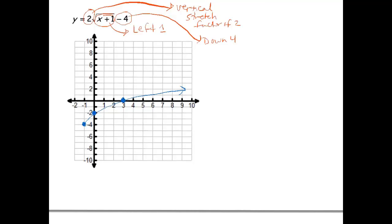And notice that the order I did my translations was the left, or in this case, we did left but we could have done right. That was our first translation. The second was the vertical stretch. And the third was the up down. And that's just because of the order of operations, right? If we were to substitute a value in for x, that's the exact order in which we would have done this. We would have added 1. We then would have taken the square root, then multiplied by 2, then subtracted the 4.